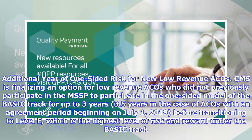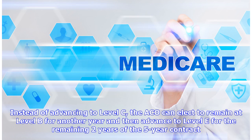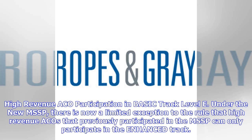Additional year of one-sided risk for new low revenue ACOs: CMS is finalizing an option for low revenue ACOs who did not previously participate in the MSSP to participate in the one-sided model of the Basic Track for up to three years — or 3.5 years for ACOs with an agreement period beginning July 1, 2019 — before transitioning to Level E. Under this option, the ACO enters at Level A, automatically advances to Level B, and can elect to remain at Level B for another year before advancing to Level E for the remaining two years of the five-year contract.